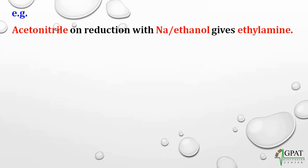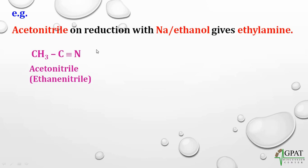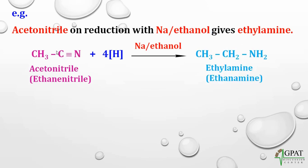Suppose the reaction is acetonitrile. Acetonitrile on reduction with sodium in ethanol gives ethylamine. This acetonitrile on reduction in the presence of sodium in ethanol — the hydrogen breaks the carbon-nitrogen bond and forms ethylamine. Here the carbon number was 1 in acetonitrile, and here the carbon number is 2 in ethylamine. So, the carbon number always increases by 1 in the Mendius reactions.